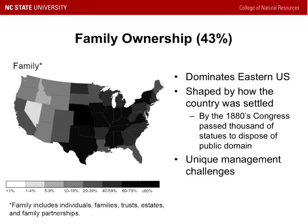Now we're going to talk about private ownership, starting with family ownership — the first category and the largest of the private landownership groups. Most of our forest cover is in family ownership, about 43% of it here in the U.S. This ownership pattern was shaped by immigration and settlement: people were given land as incentive to move and settle different parts of the U.S., and land was also given to soldiers as payment for their service.